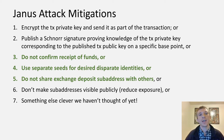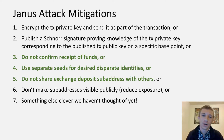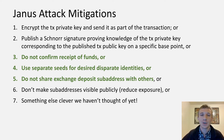What are some mitigations users can do? The first two are protocol-level changes that Monero has not implemented, and there is still debate over whether they should be implemented due to the additional transaction size they add. The first is to encrypt the TX private key and send it as part of the transaction. The second option is to publish a Schnorr signature proving knowledge of the TX private key corresponding to the published TX public key on a specific base point. I'm not going to get into either of those specifics for this episode.